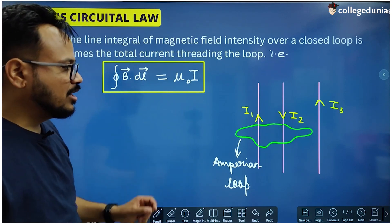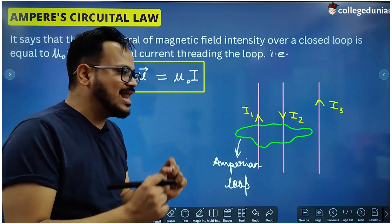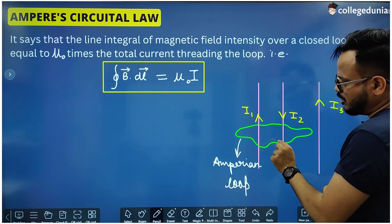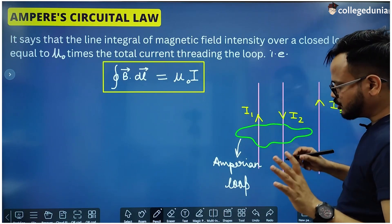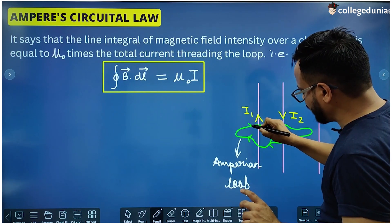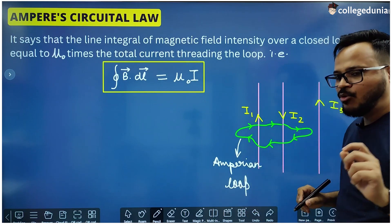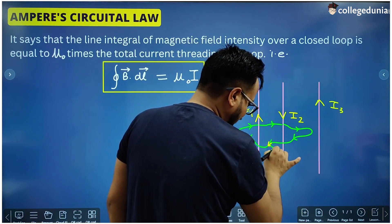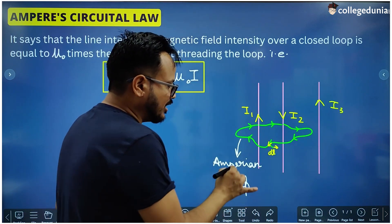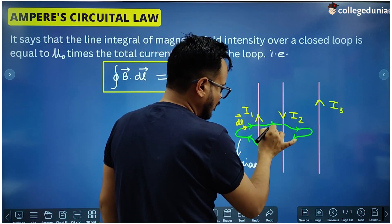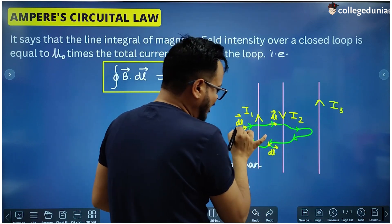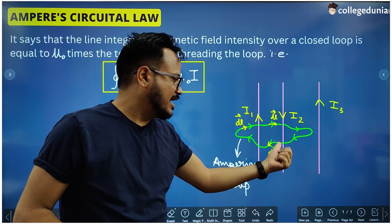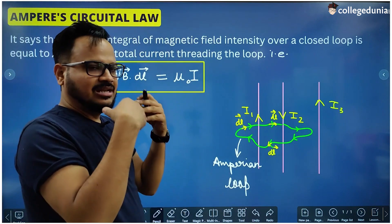After taking the loop, let's decide a direction of traversal. Any direction you like — you can move along this loop in this direction or in this direction. Suppose we are taking this direction. Now at every point on this loop there are small lengths of value DL along the direction of the traversal. At every point there are infinitely small parts of this loop whose length is DL and the direction is in the direction of traversal.